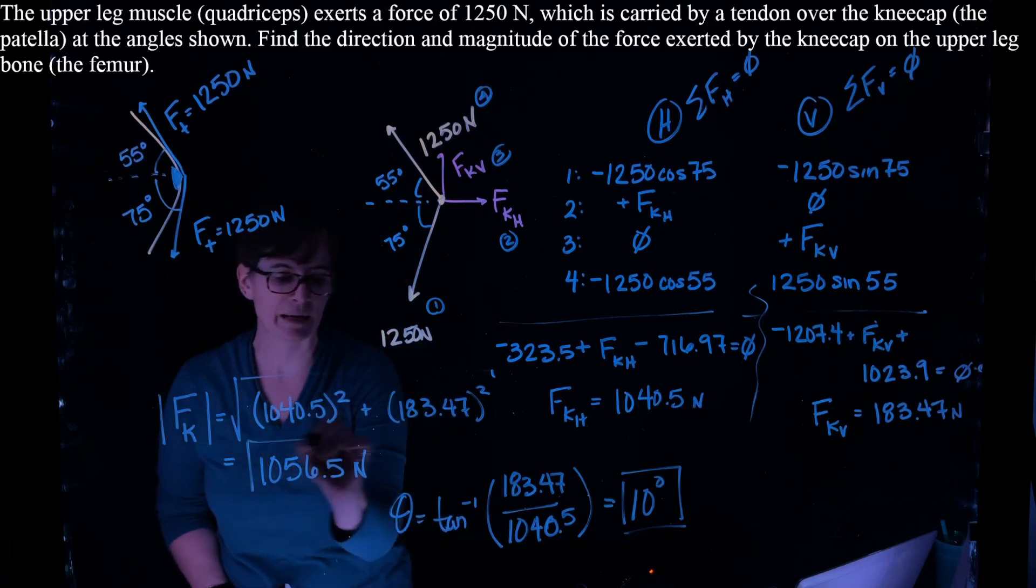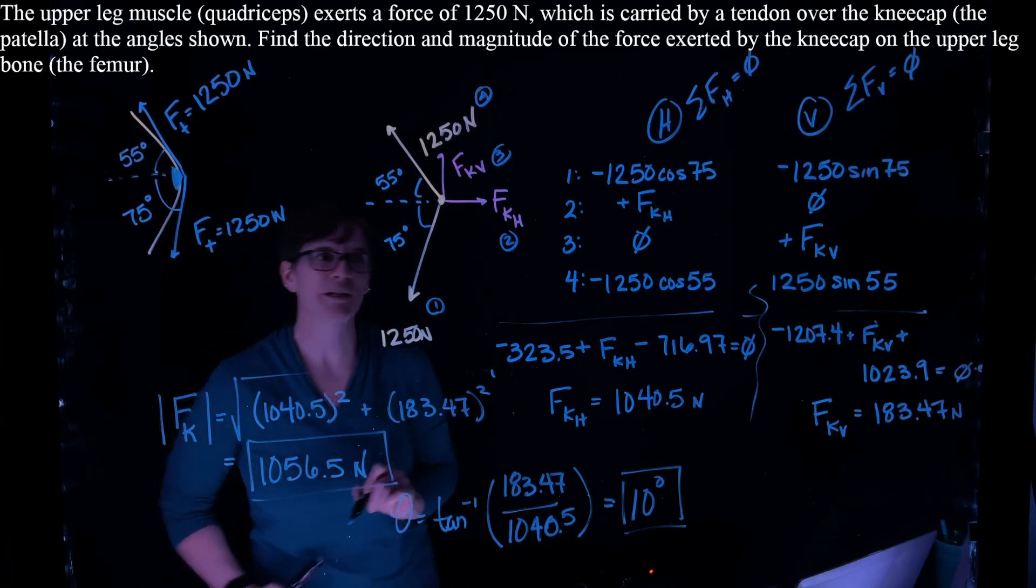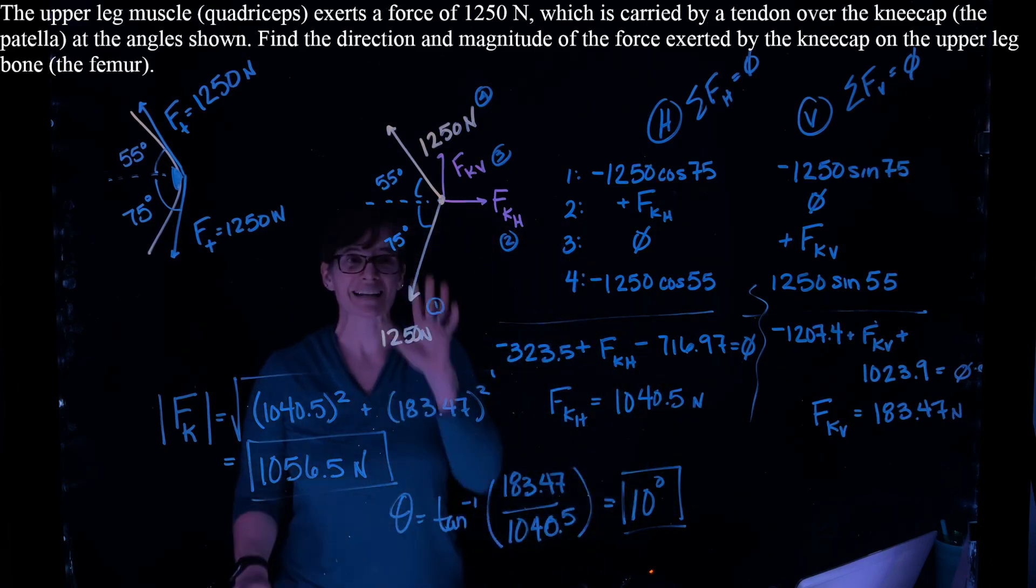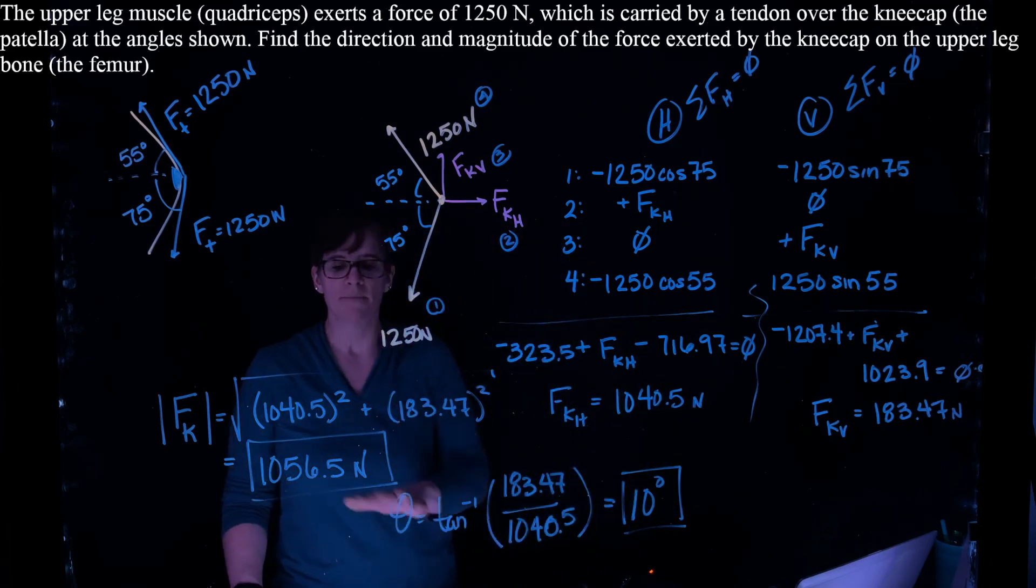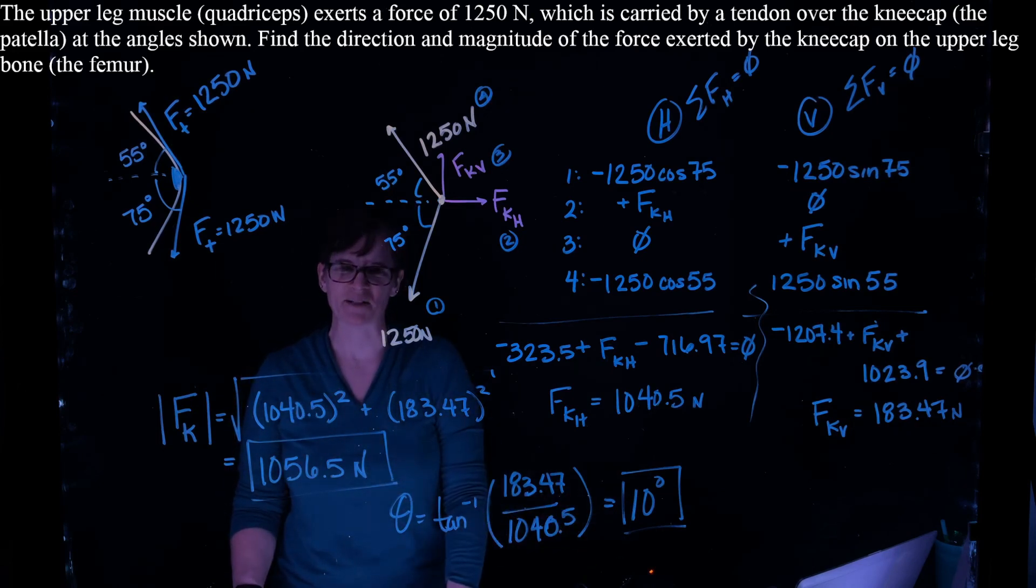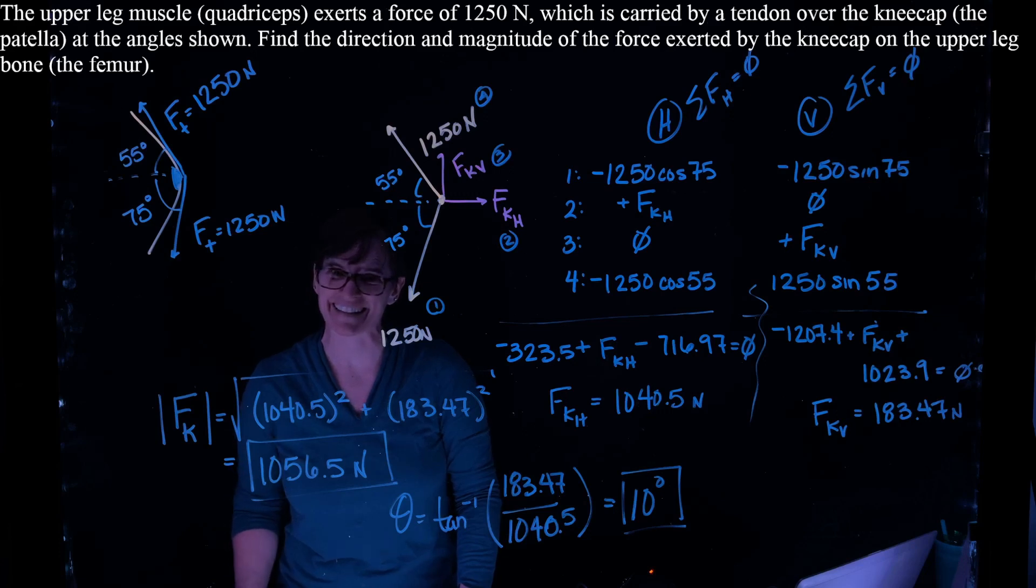So using my static equilibrium idea, in this case, I only had to look at the net force acting on this muscle. I get a magnitude of 1056 and an angle of 10 degrees. All right, so static equilibrium force analysis. Good job.